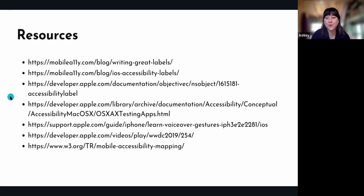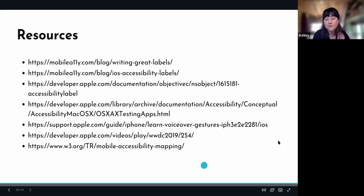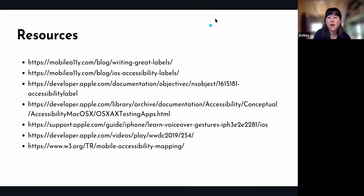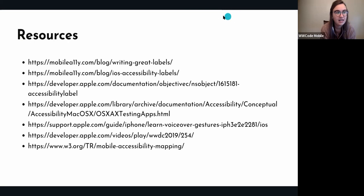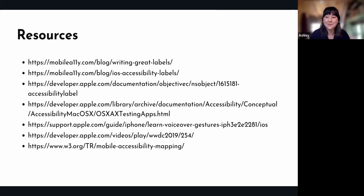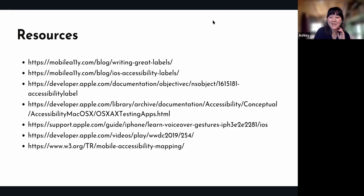We had a question: can we modify the accessibility hint to shorten it for subsequent clicks, so it doesn't read out the full hint every time — like with the like or download button? On iOS I don't think there is a way. On Android in Jetpack Compose, very recently you can add a specific action label to make it more meaningful — like 'double click to navigate to settings' instead of the generic 'double click to activate.' But you can't get rid of all of it.